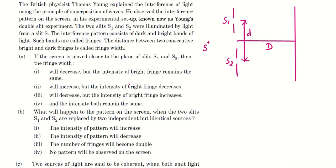Now let's read the first question. If the screen is moved closer to the plane of the slits s1 and s2, then the fringe width, what will happen to fringe width? So we know fringe width beta equals lambda D divided by d.